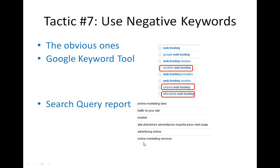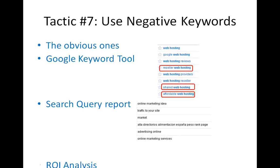For example, looking at my online marketing ad group, I can see keywords like 'online marketing idea' — I don't want people searching for ideas to find me. So I check what people actually search for, and if it's not a keyword I want in my campaign, I can add it as a negative keyword.